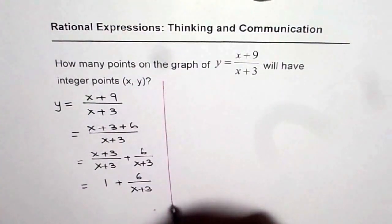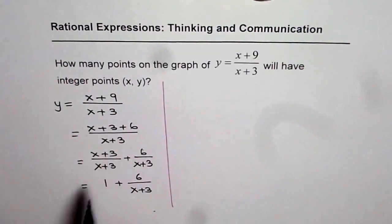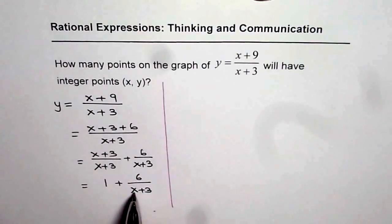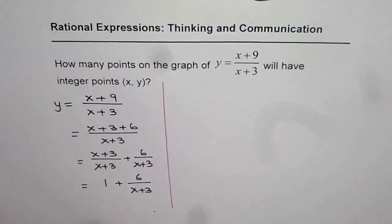Now let us look into this problem once again. y is equal to 1 which is an integer plus another part 6 divided by x plus 3. That could be fraction. Now, to make it integer, x plus 3 should be a factor of 6.